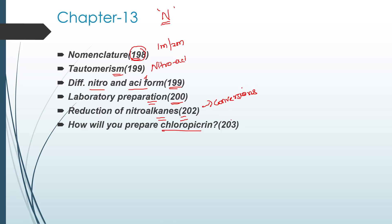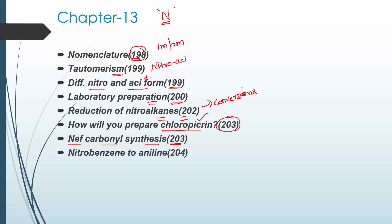How will you prepare chloropicrin? Very important reaction — public question, page 203. Next, Nef carbonyl synthesis, page 203 — important. Next, nitrobenzene to aniline, page 204 — reduction reaction. This is very important.